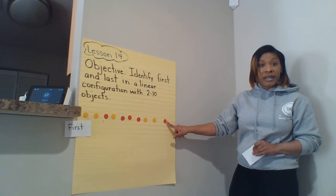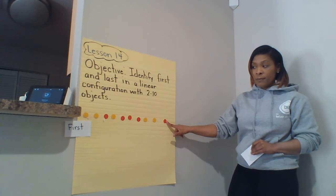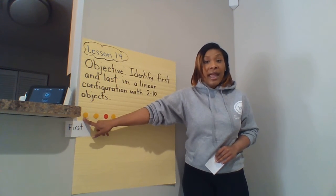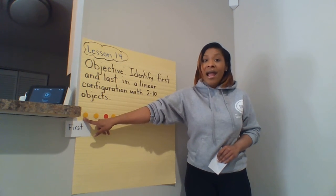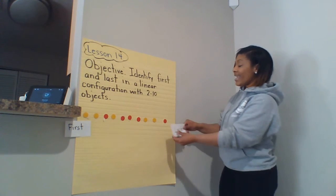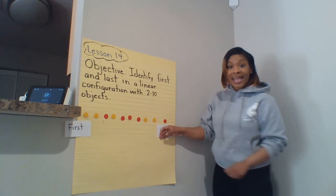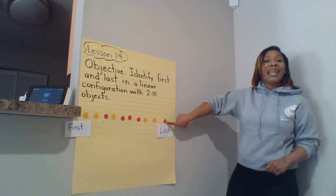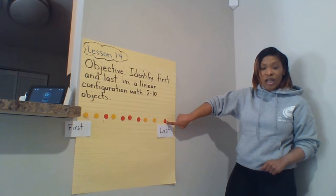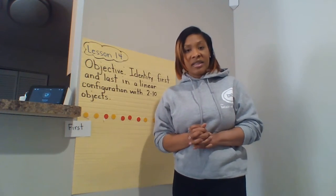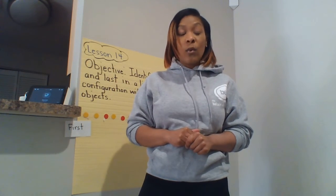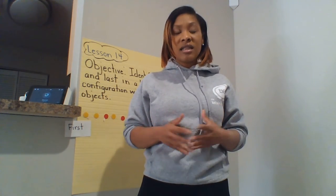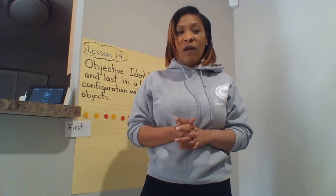Which color counter did Ms. Chase touch first? Very good — the yellow counter. Ms. Chase touched the yellow counter first. And how do I know? Because it is the first counter I touched. Which one is last? The last counter Ms. Chase touched is the red counter — and how do I know? Because it is the last one I touched. Remember, parents, we're going to check for our children's understanding and make sure we're switching those objects up so they're not always doing the same first and last, because we want to make sure they understand as we add more objects. And remember, linear is when it's in a straight line.